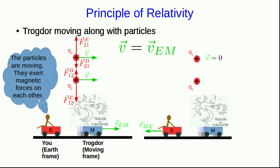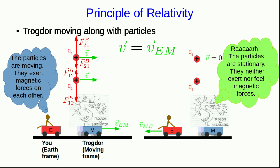However, Trogdor disagrees. According to Trogdor, these particles aren't moving, and so they don't produce any magnetic fields, and they don't feel any magnetic forces. All Trogdor will measure will be electric forces on the charges.